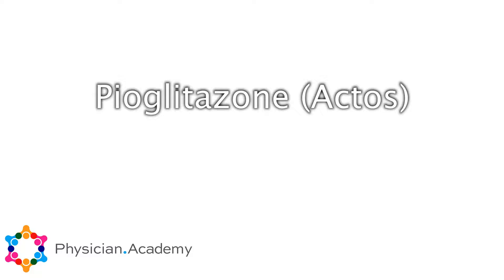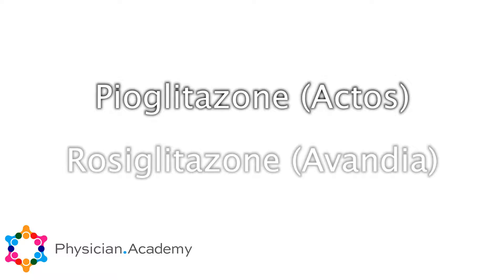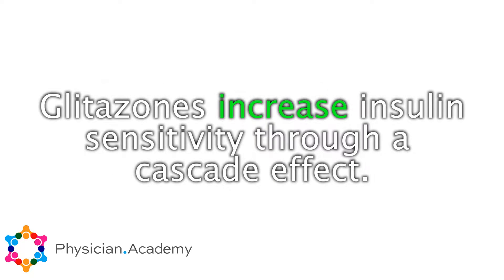The two glitazones that are commonly used are pyoglitazone, also known as Actos, and rosiglitazone, known as Avandia. The mechanism of action mainly is increasing insulin sensitivity through a cascade effect.